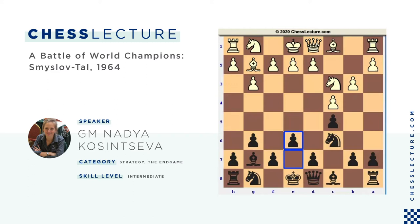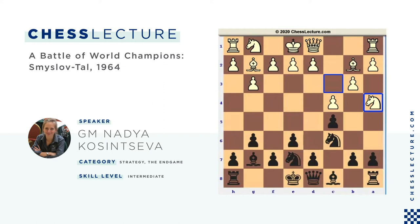After Bb2, Nge7, white played Na4 — in my opinion not the best move. First of all, white brings the knight to the corner of the board. It's temporary — the knight attacks the c5 pawn, and in the case of Bb2, Nb2, the knight can go to Nd3 pretty quickly. But I believe white is not ready and the knight would be better on e4.